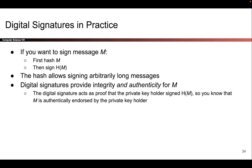A couple of final notes: digital signatures are based on the same number theory as public key encryption, which means there's a limit to the length of messages you can sign. For example, if you're working mod n, you can only sign messages between 0 and n−1. To handle arbitrarily long messages, you simply hash the message first and compute the digital signature on the hash, which is shorter and fixed length.